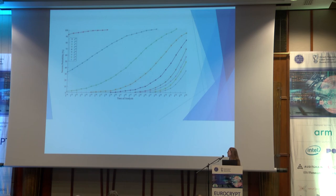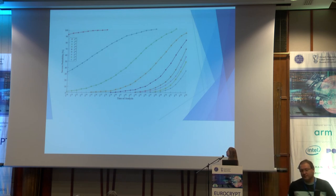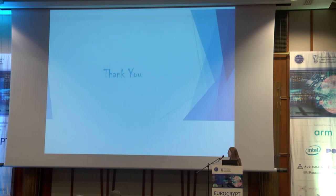Here we can see a three-dimensional graph. This is the success rate, this is the time of analysis, and the different colors are different amounts of known plaintexts. The red one is 2 to the 43, the blue one is 2 to the 42, and so on. Thank you very much.